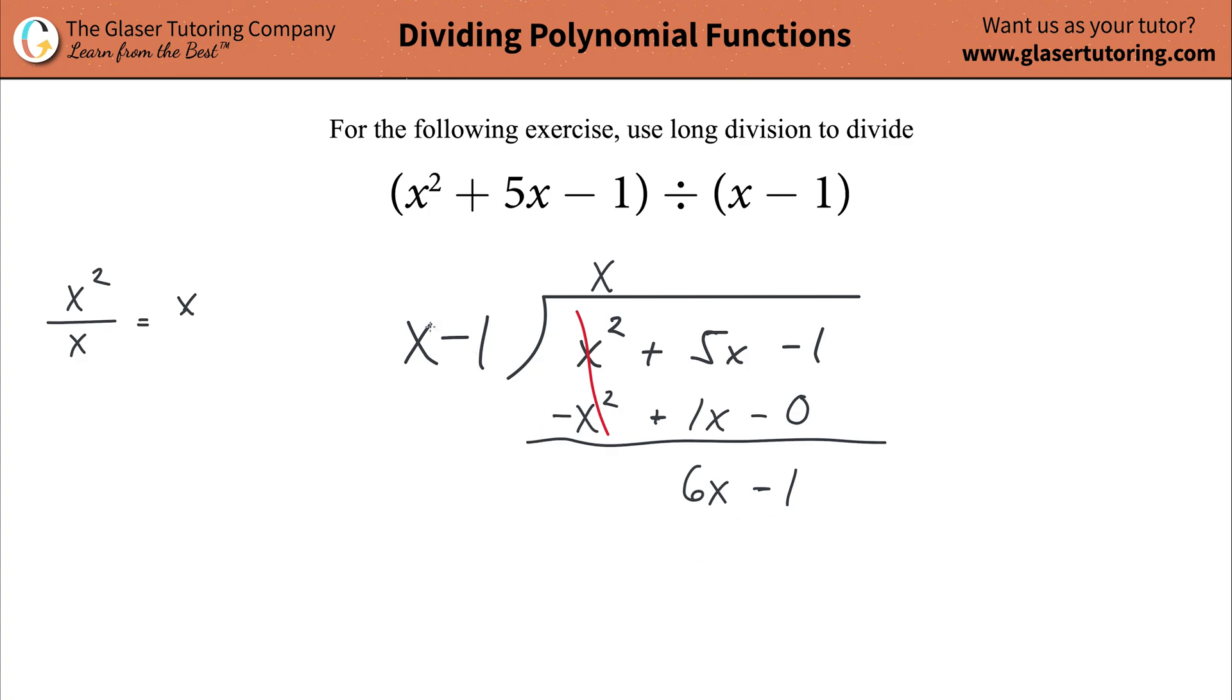The next step then is to again take your divisor, look at the highest power again, and then figure out how many times does this highest power of x go into your new dividend. In other words, we're going to now take the six x and divide it by x. So what does this division work out to be? The x is just canceling. You're left with six. What kind of a six negative or positive? It's going to be positive. So that's why it's going to be plus now six on the top.